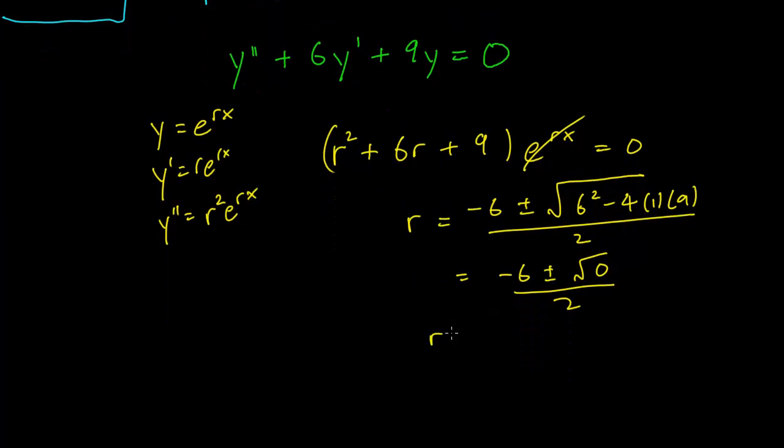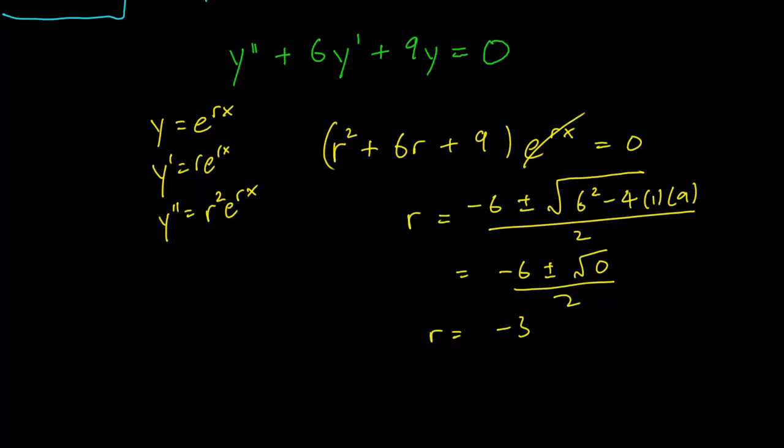And here you see that we have a problem already. r is going to equal minus 3 and we don't get a second solution. But you know that this is a second order differential equation, so we need to find two linearly independent solutions to get a general solution.